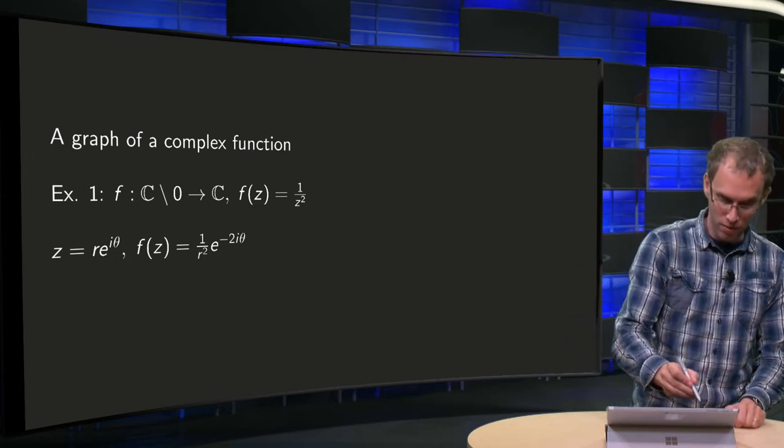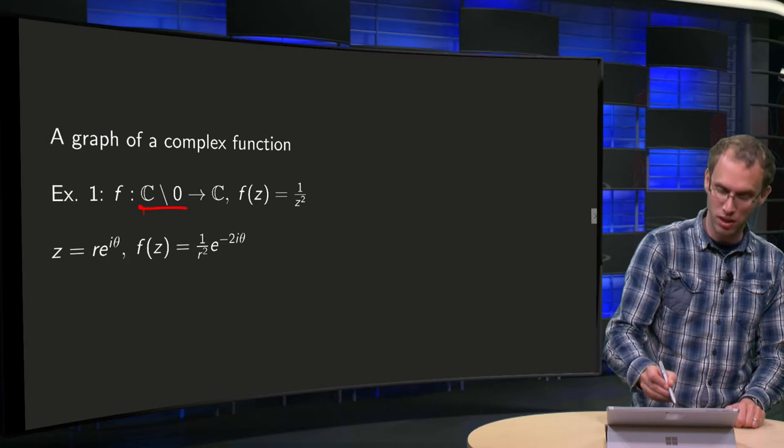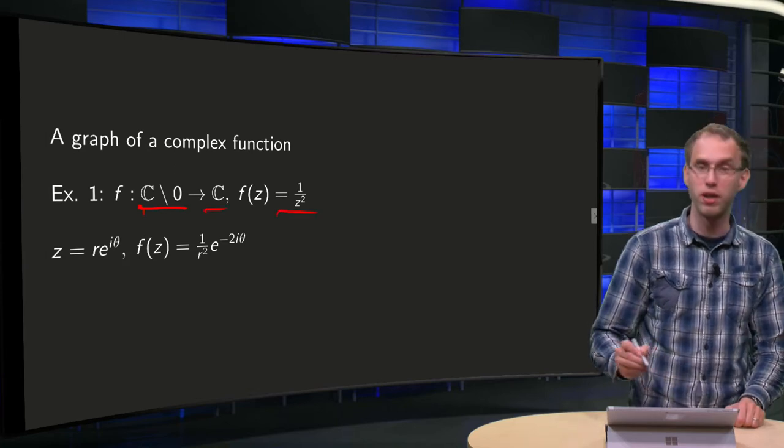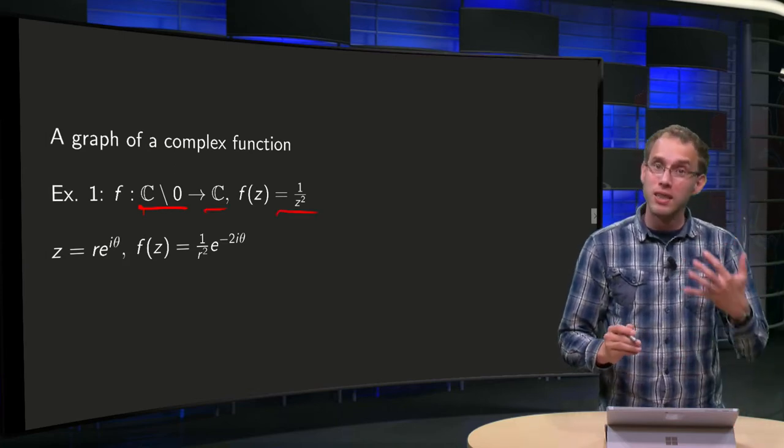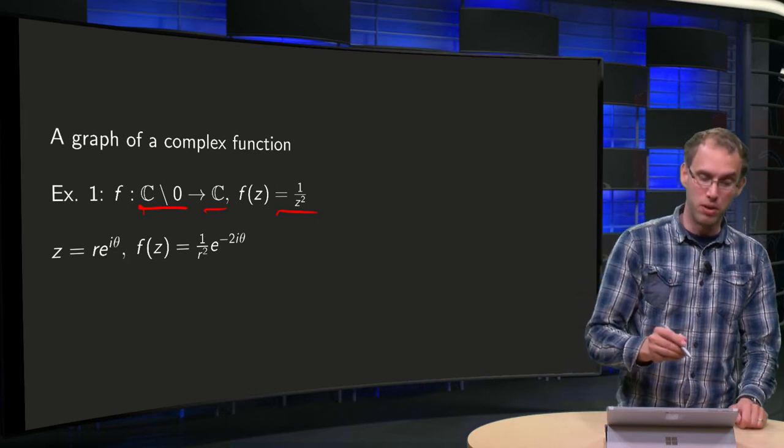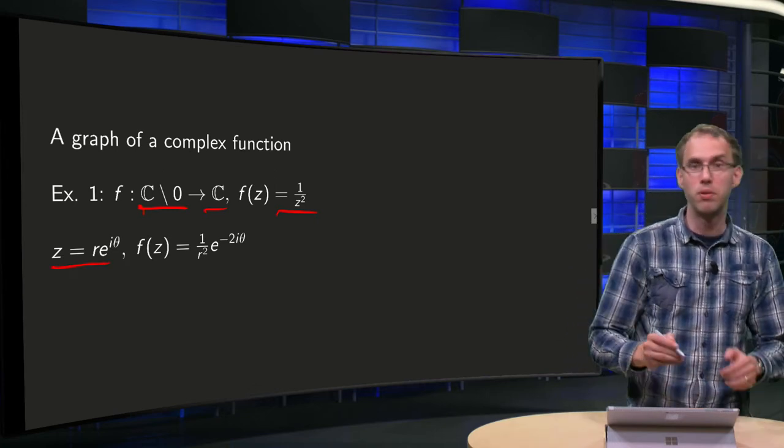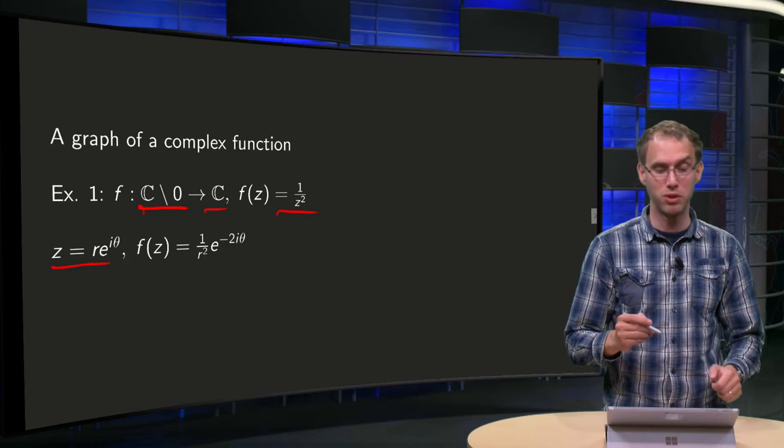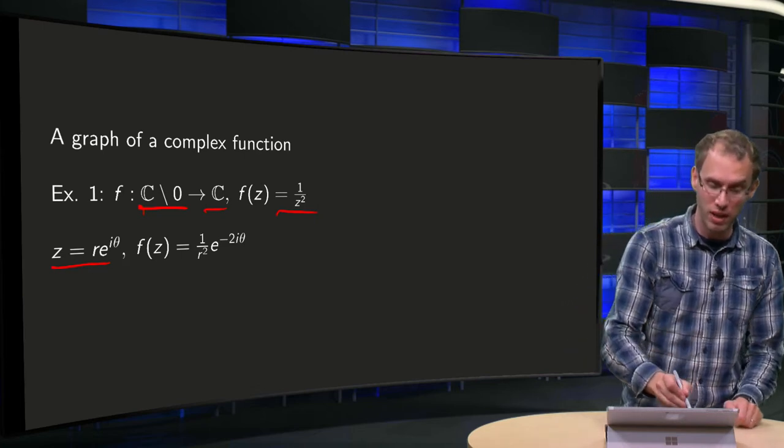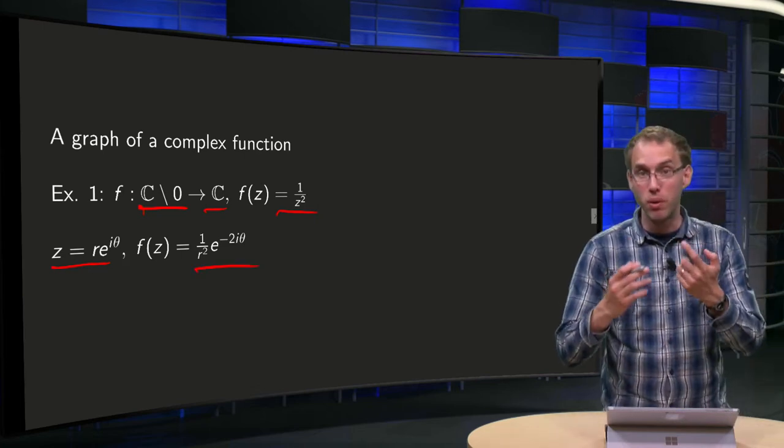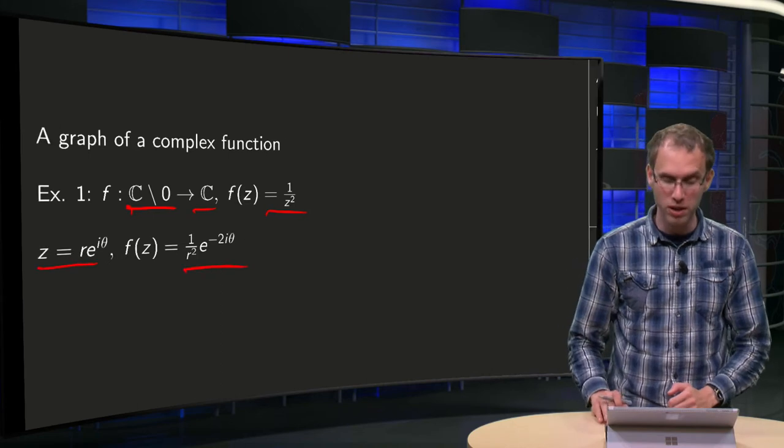Let's start with the example f from C\{0} to C, f(z) = 1/z². This one can be done if you realize that if you put z in polar form, z = re^(iθ), then f(z) becomes (1/r²)e^(-2iθ).